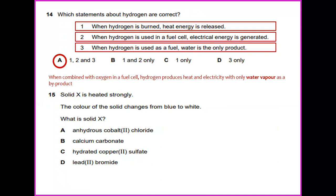Solid X is heated strongly. The color of solid X changes from blue to white. What is solid X? When hydrated copper sulfate, which is the answer C, is heated strongly, the color changes from blue to white because of loss of water.